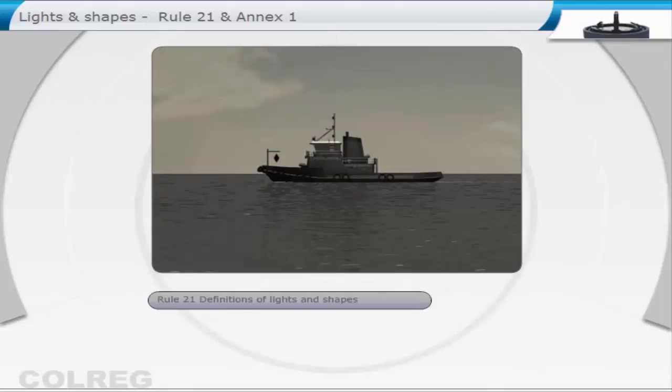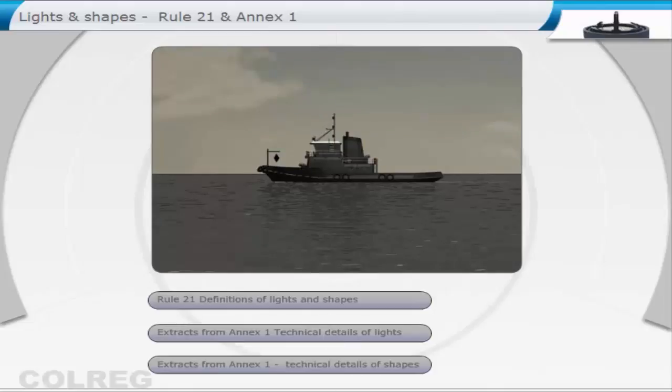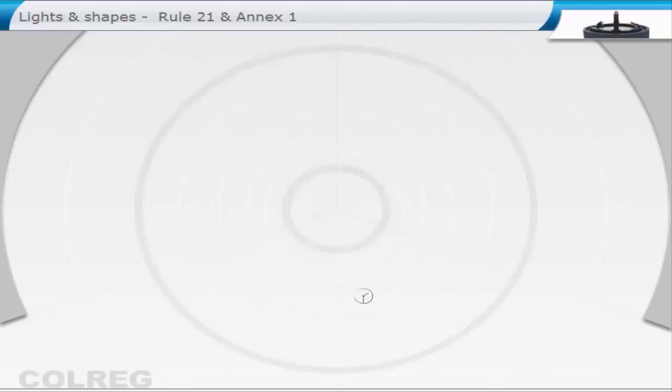Rule 21: Definitions of lights and shapes. Extracts from Annex 1: Technical details of lights and shapes.